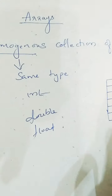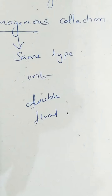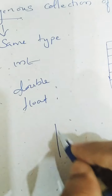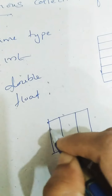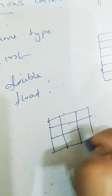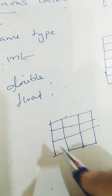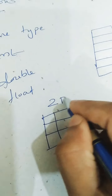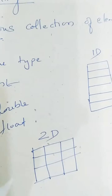This is a one-dimensional array. An array can be one-dimensional, two-dimensional, and multi-dimensional. Two-dimensional means it will contain both rows and columns like a table — elements will be arranged in both rows and columns. This is a 2D array, and this is a one-dimensional array.